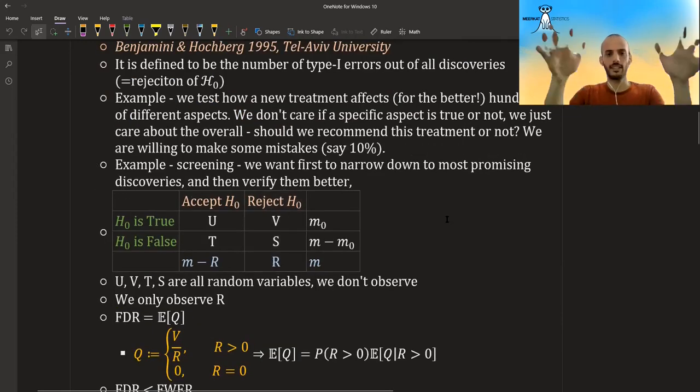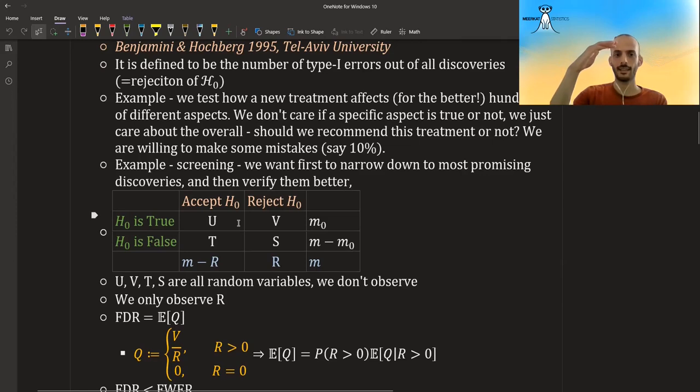What the FDR is. Suppose we can make a contingency table, a 2x2 table, where on the left side, we have the true positions, if H null is true or H null is false. So suppose we know it somehow, an oracle told us, and these are the rows, and the columns are what we chose. Did we choose to accept the null hypothesis, or we chose to reject the null hypothesis. So all of these are just notations that I gave, U, T, V, S.